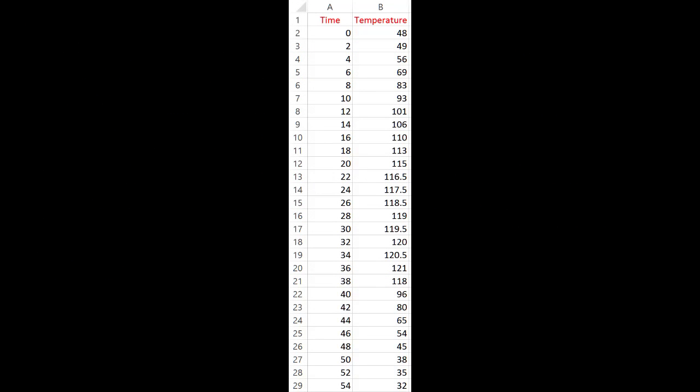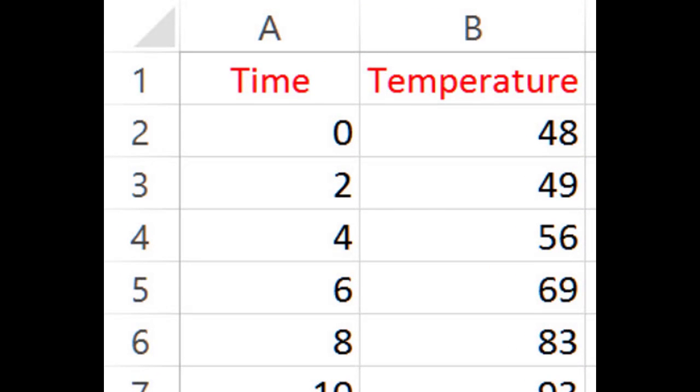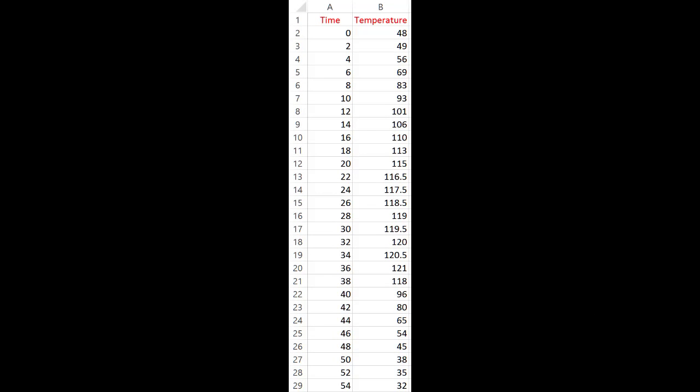Here in the spreadsheet, we have the heat penetration data in two columns. We have the time in column A and temperature in column B. This is a temperature recorded at the slowest heating point inside the can. Now you will notice that the temperature increases from 48 degrees C to 121 degrees C at 36 minutes. That is where the heating is stopped and then cooling begins. And again, the temperature decreases during the cooling period. Notice that temperature is recorded every two minutes.